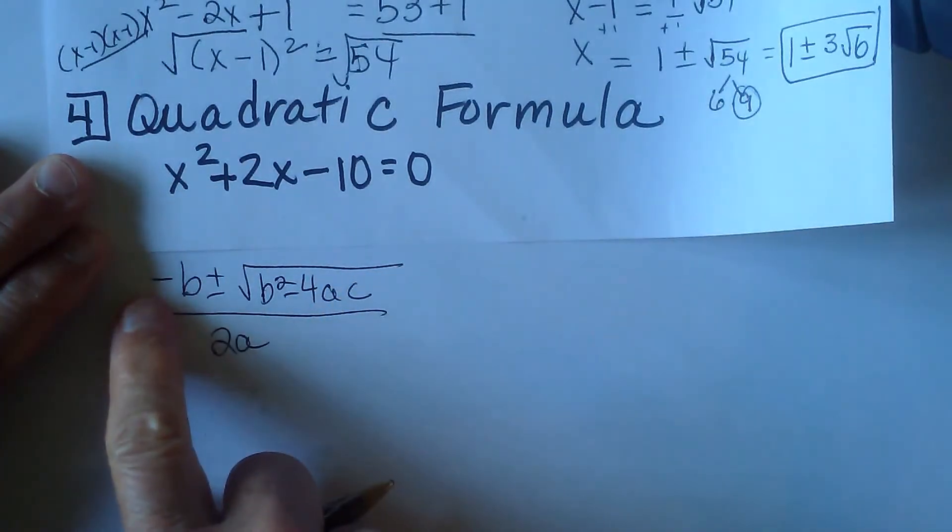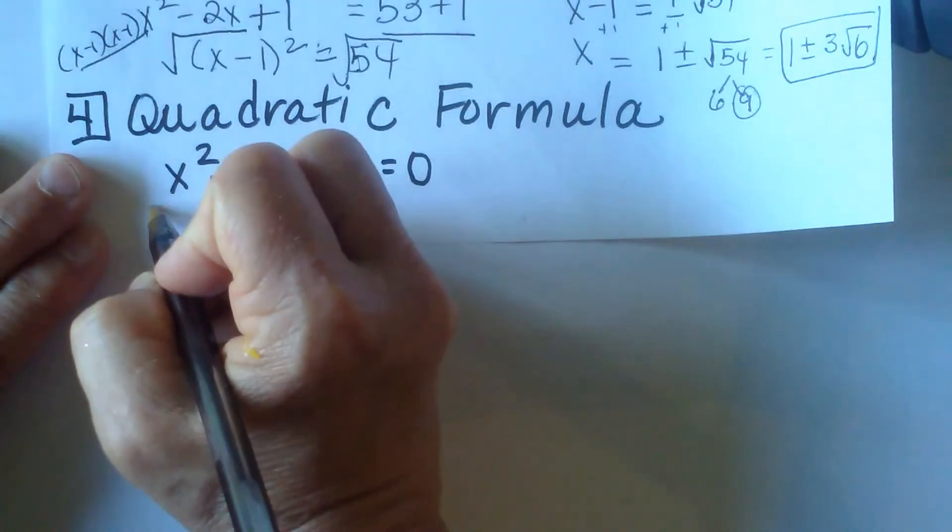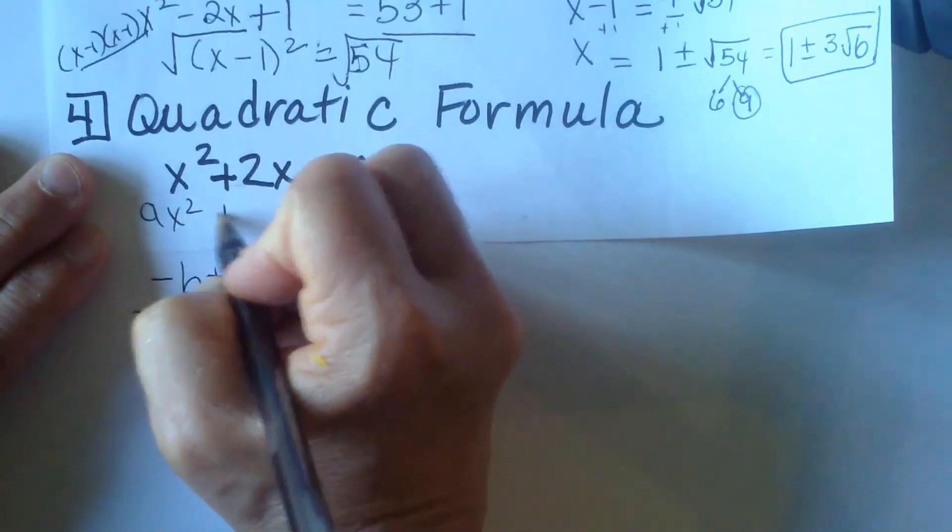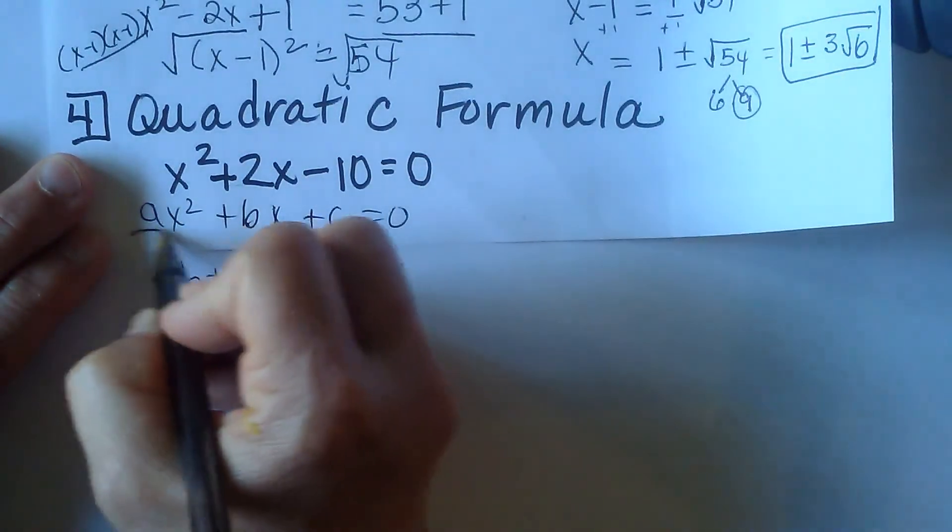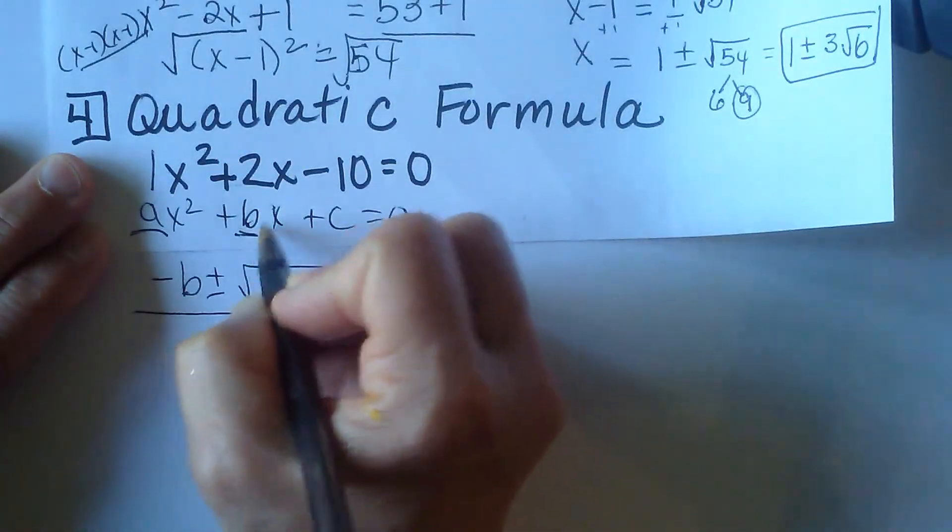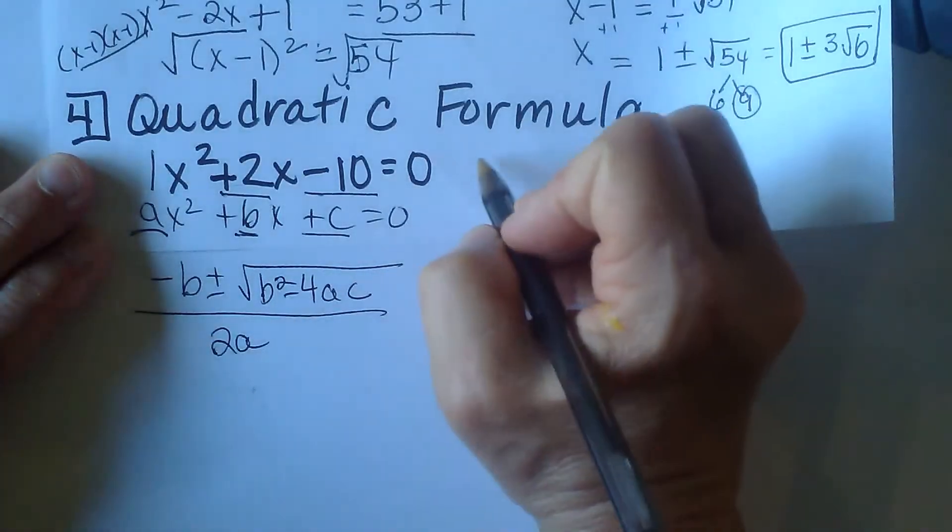Now we have to define our a, b, and c for this. Well a, b, and c come from standard form. Remember ax squared plus bx plus c equals 0 is standard form. So a in this case is 1, b is a positive 2, and c is a negative 10. So let's plug those in.